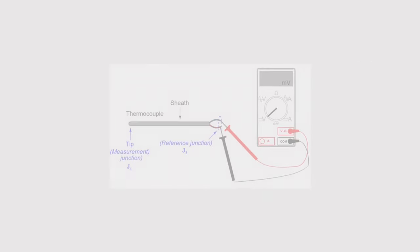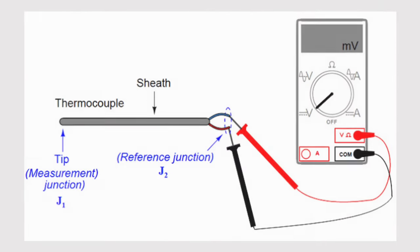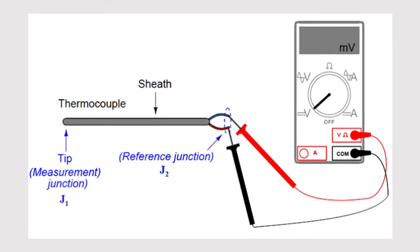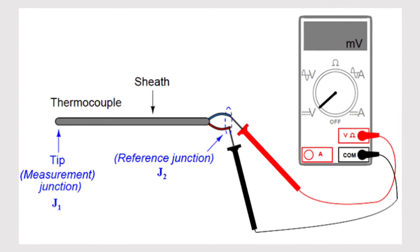Ensuring the tip is nice and hot from the flame, take one lead from the meter and put it on the shaft of the thermocouple, and the other lead on the end of the thermocouple where it makes contact with the gas valve.